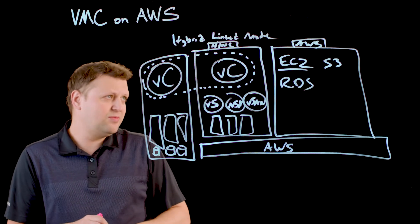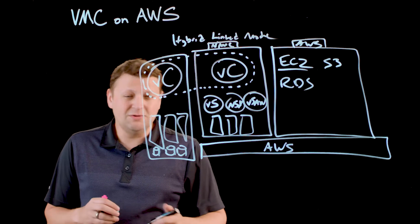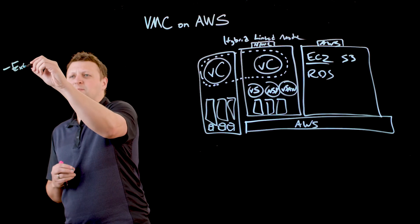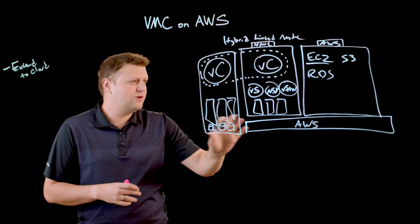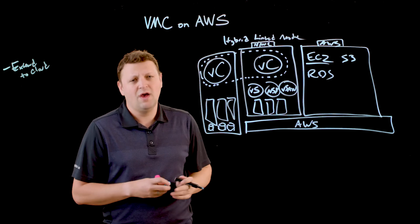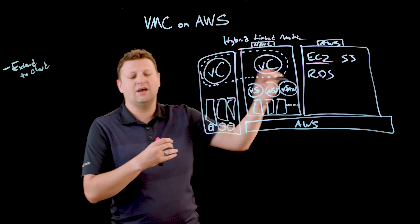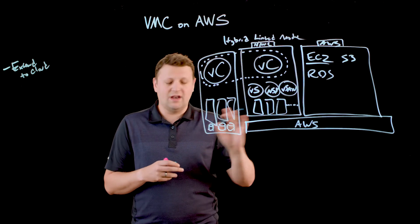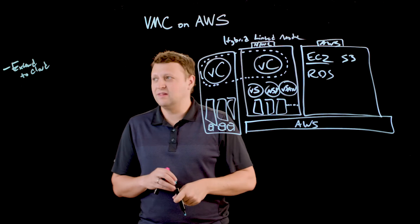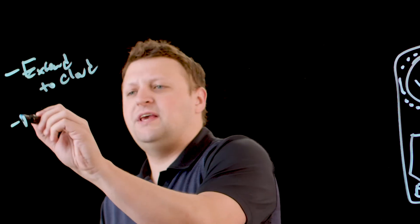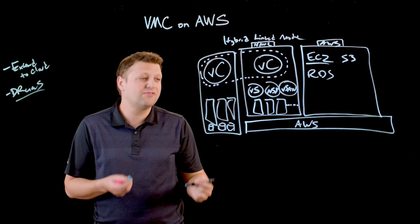The use cases are quite simple. The first is extending to cloud when you need to burst — such as retail workloads that need additional compute for only a season. You can scale out hosts and then scale them back at the end of that season. That's on-demand consumption that can be consumed and then returned. We also see DR as a Service being a widely popular use case, so you don't have to pay for all the compute all the time.